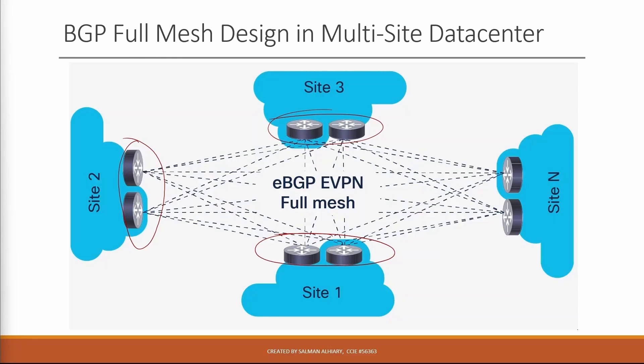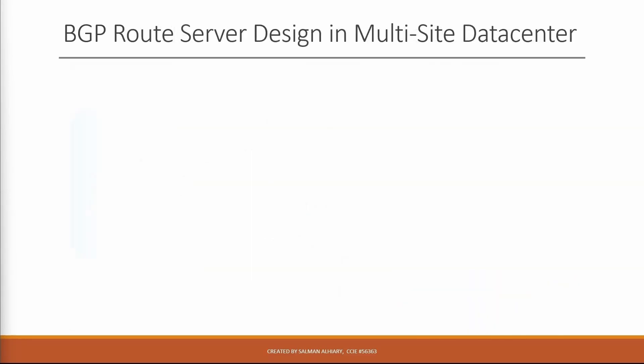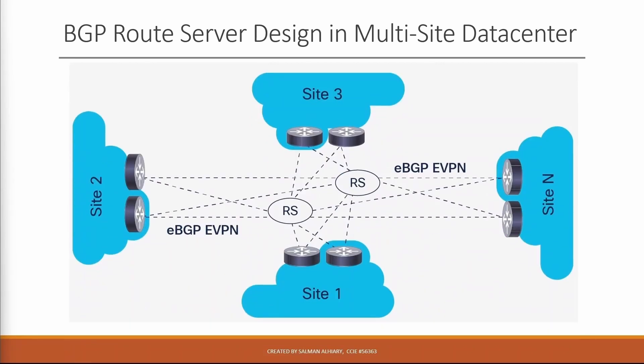When you deploy two sites with two border gateways, the number of BGP peerings remains manageable. However, when you scale out the EVPN multi-site environment and add more sites and border gateways, the number of full mesh BGP peerings becomes difficult to manage and creates a load on the control plane. So instead of having full mesh, we can use route server design in multi-site data center.